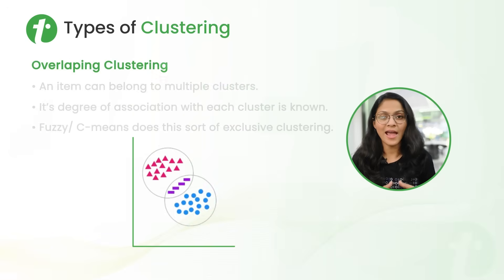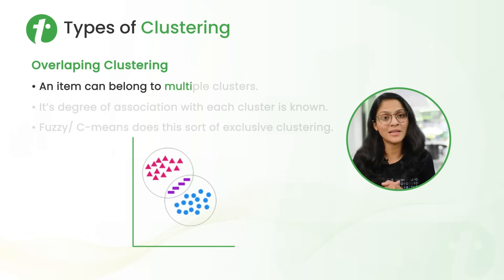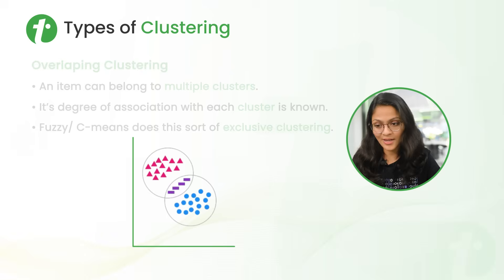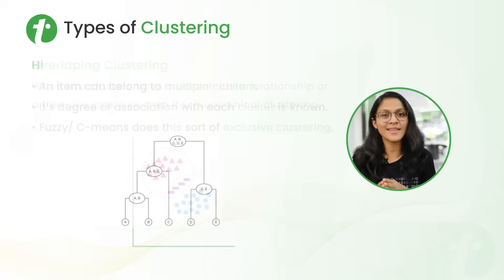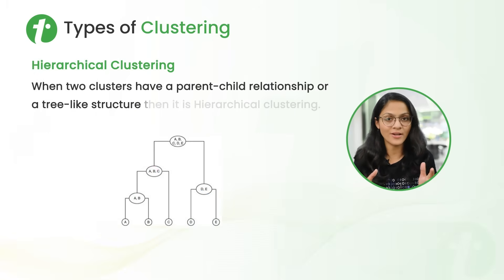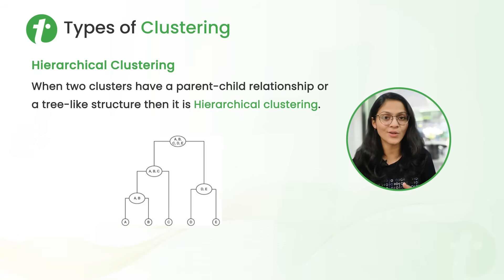Second is overlapping clustering. As the name suggests, in overlapping clustering an item can belong to multiple clusters. From the diagram you can observe that rectangular data points belong to both the triangular group and the circular group. Next is hierarchical clustering — when clusters have a parent-child relationship between them, building a tree-like structure, that is called hierarchical clustering.